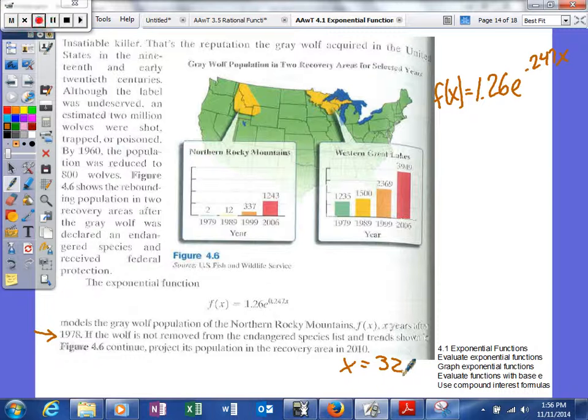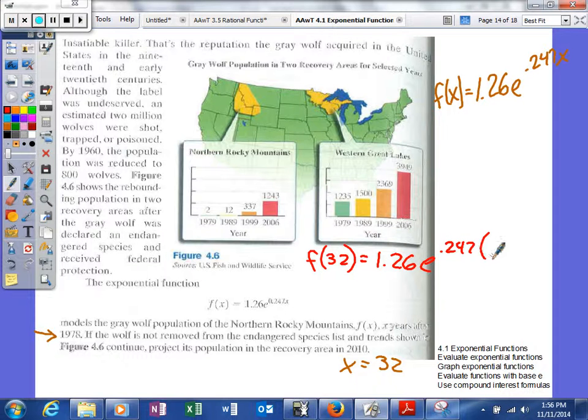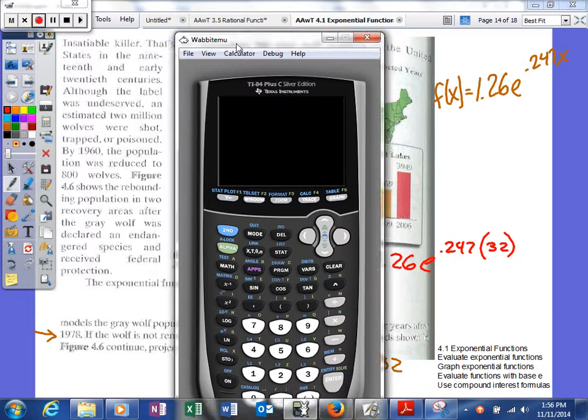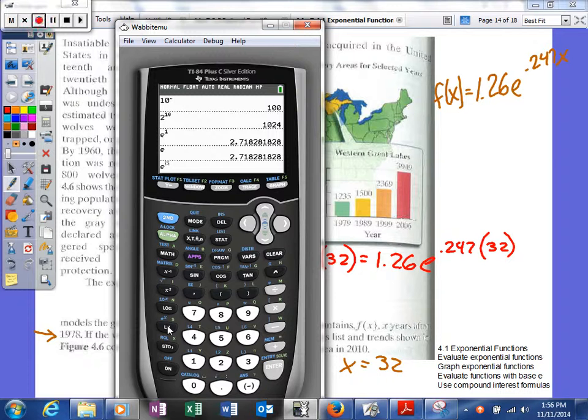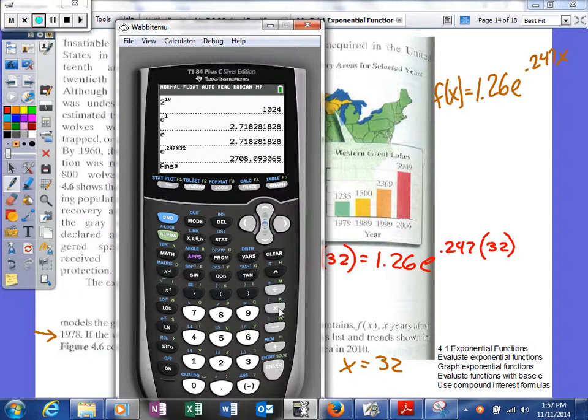What we're going to do is basically take that value and we'll say f(32) = 1.26e^(0.247 × 32). So we're going to use our calculator now to compute this value. I'm going to go second ln, and I'll say 0.247 times 32. Make sure that it writes everything as the exponent because some calculators, some older models, when you hit times, will put the 32 down on the regular line and not make it in the exponent. So we get that right there, and we're going to multiply that by 1.26.